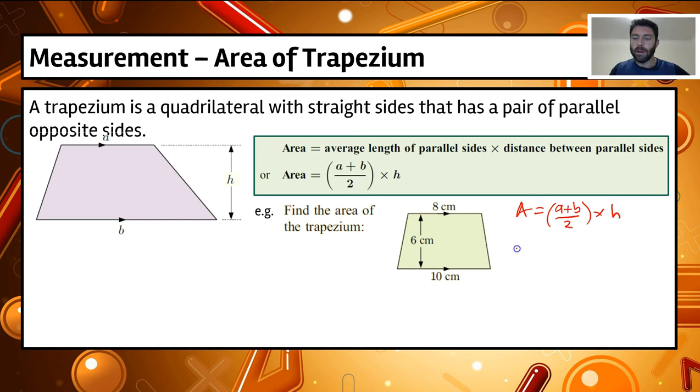So our area, now substitute equals A which is 8 at the top here plus 10 divided by 2, multiplied by the height which is 6.